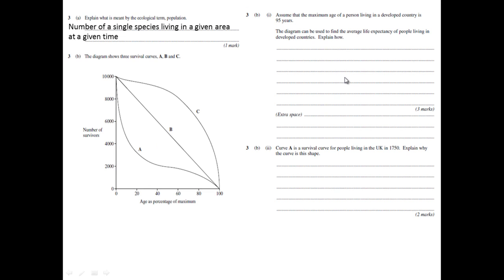The question says, assume that the maximum age of a person living in a developed country is 95 years. The diagram can be used to find the average life expectancy of people living in developed countries. Explain how. It tells you that the maximum age that people can live to in a developed country is 95 years. This is where this value here comes in, age is the percentage of maximum.